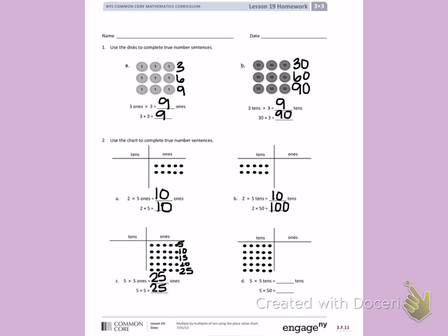In part D, I have 5 rows of 5 10's. So again, I have 5 10's, 10 10's, 15 10's, 20 10's, 25 10's. I can count by 5's to help me get that answer. When I look at 5 times 50, I know the answer is 25 10's. 25 10's is 250.